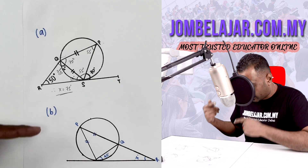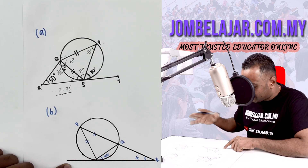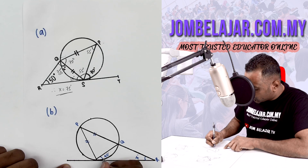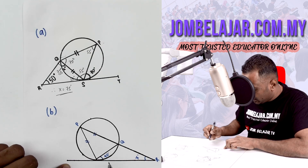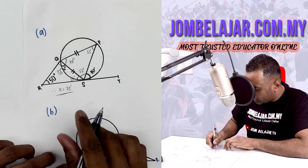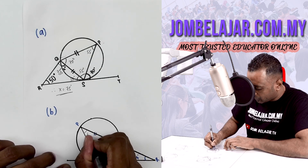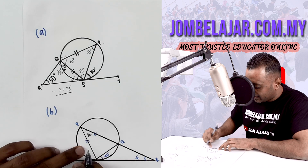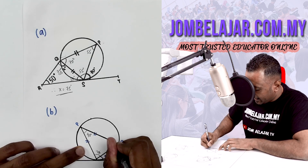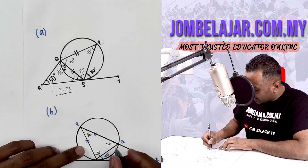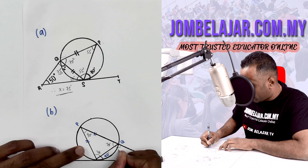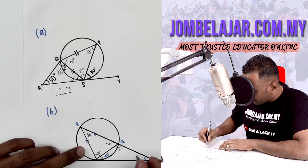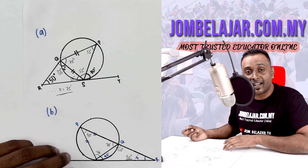Question B uses a similar concept. We have a triangle and a tangent. From the tangent, there is a 40-degree angle, so the angle in the alternate segment is also 40 degrees. One triangle has 180°; subtracting 40° leaves 140°, so each base angle is 70 degrees. This straight line gives 180 − 70 = 110. So in the next triangle: 110 + 40 = 150, therefore X = 180 − 150 = 30 degrees.